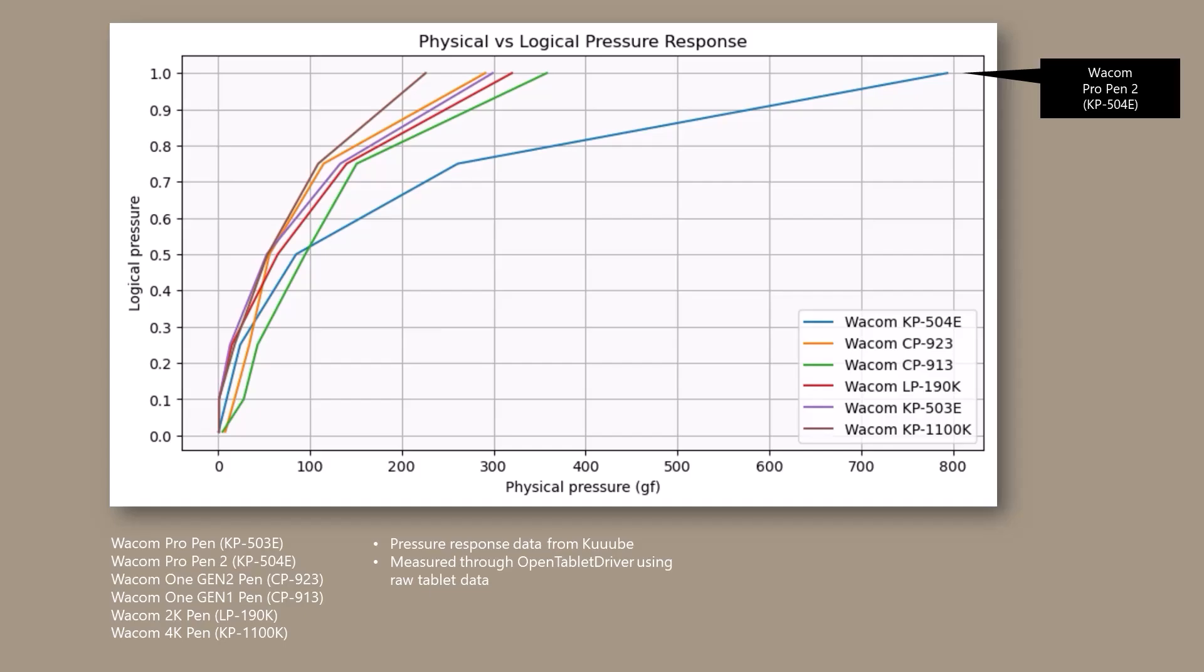We can ignore the bottom left where all the curves begin. That is where the initial activation force values come into play, and that's not important for this video. The top parts of the curve that hit the logical value of 1 are quite scattered, and that's because these pens differ quite a bit in their maximum pressure. Here again, and I mention this so often, the Wacom Pro Pen 2 has an extremely wide pressure range.